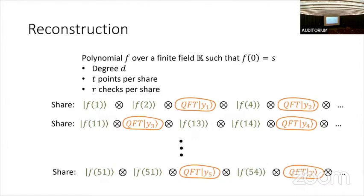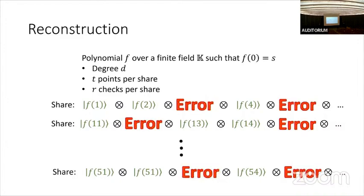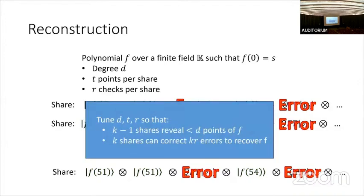When reconstructing, we have a large number of evaluations of f mixed with some check positions uncorrelated with f. If we measure everything in the computational basis, each check position gives a random error. The key insight is that if we have enough redundancy — enough evaluations of the polynomial in k shares — we can actually correct all of these errors. We show that it's possible to tune the degree of the polynomial, the number of evaluations in each share, and the number of check positions so that k−1 shares are unauthorized and don't reveal the polynomial, but if you have an authorized set of at least k shares, you can correct all of the errors.